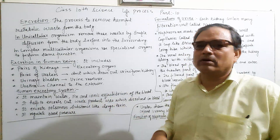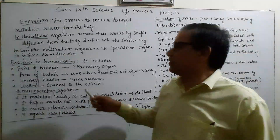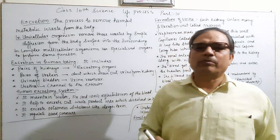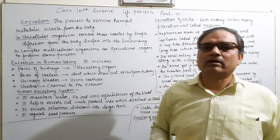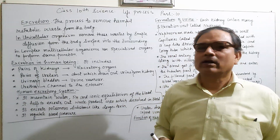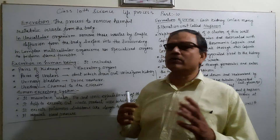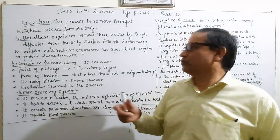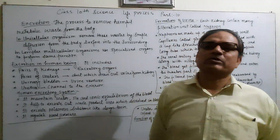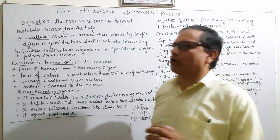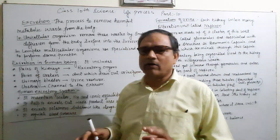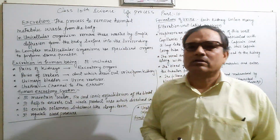In multicellular organisms — those with more than one cell — the complexity increases. More cells and more tissues are formed, so they require specialized cells, tissues, or organs to remove waste material from the body.